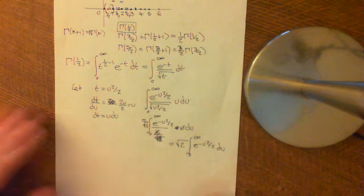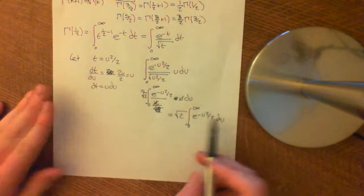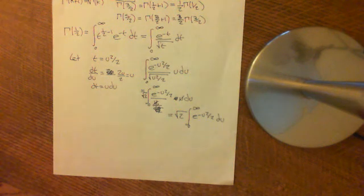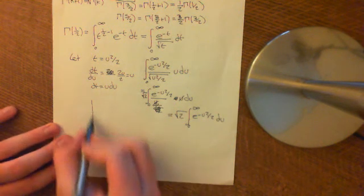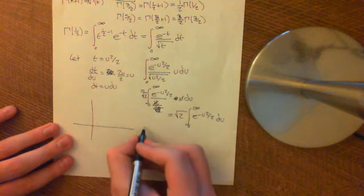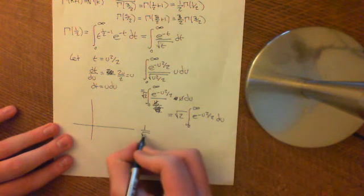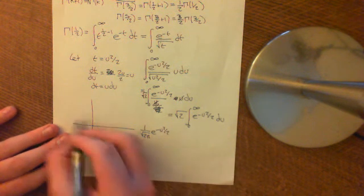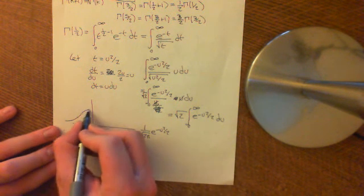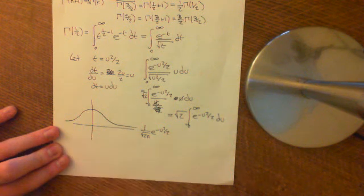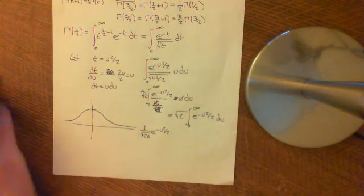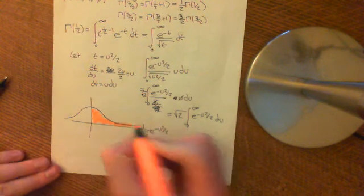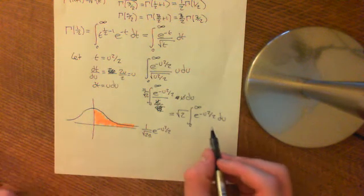Now I want to remind you of how we calculated this integral long ago when we did standard normals. The PDF of the standard normal is equal to 1 over the square root of 2π, times e to the negative u squared over 2. That looks something like this bell-shaped curve. We are now asking what is the integral from 0 to infinity — that is, what is the area underneath here.